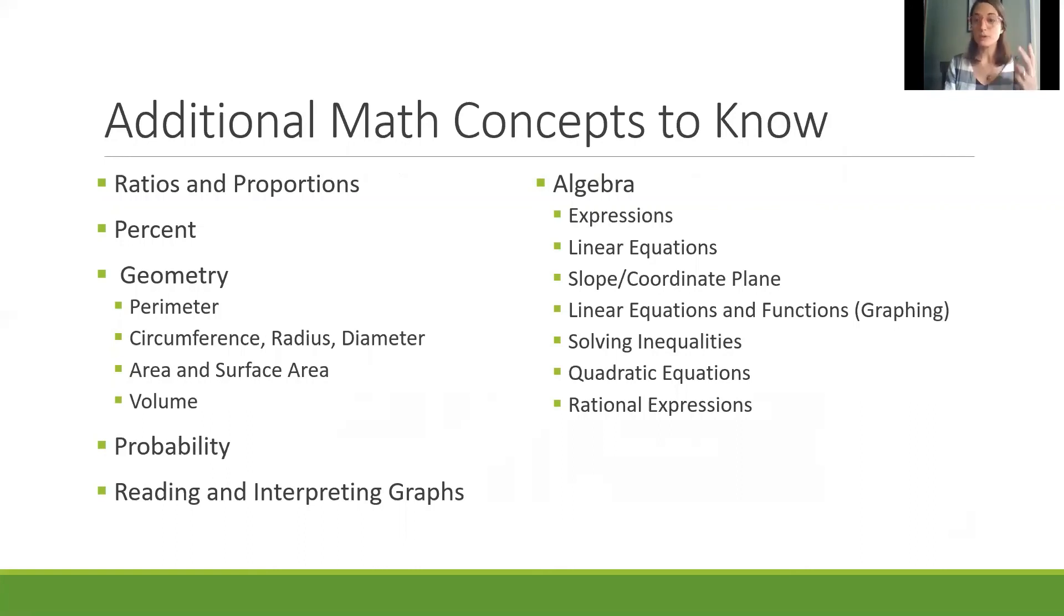Ratios and proportions, percent, some concepts around geometry like perimeter, circumference, radius, and diameter, area and surface area, and volume. You should know about probability, about reading and interpreting graphs, which is really important not only for the math but also for social studies and science. And you also should know some algebra, which includes expressions, linear equations, slope and coordinate plane, linear equations and functions with the graphing, and solving inequalities, quadratic equations, and rational expressions.